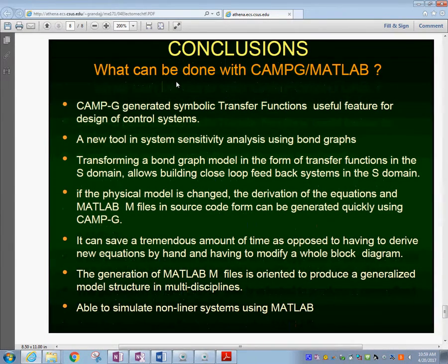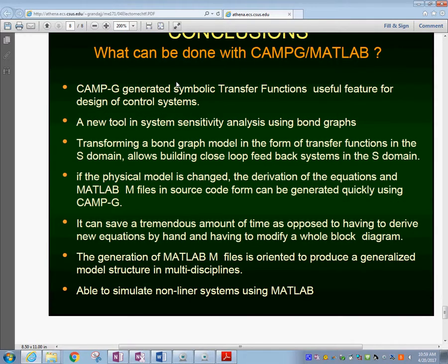What we can conclude: CAMP-G will generate symbolic transfer functions—a useful feature to design controls. We could use sensitivity analysis to a certain parameter if we know what we want to change and study. We are able to transform the bond graph models into transfer functions and then use our MATLAB commands and tools. You could change the physical system model by adding or taking away elements and produce a new simulation in just a matter of a few seconds. That is why we concluded this can save a tremendous amount of time as opposed to having to derive linear equations by hand.